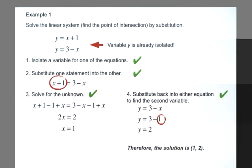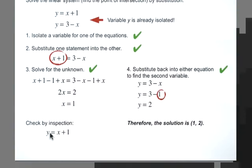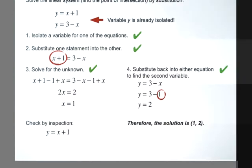We should do a check. Our solution then is 1, 2. And we should do a check where we sub in to the other equation. And if y is equal to x plus 1, well, we said x is equal to 1. 1 plus 1 is 2. So we know we've got it right. So our solution then for this linear system is 1, 2.